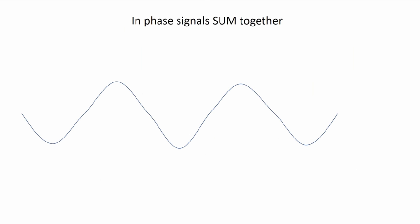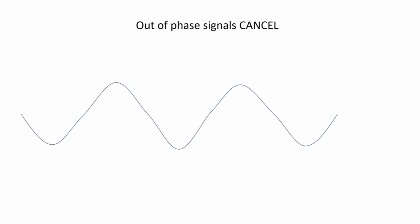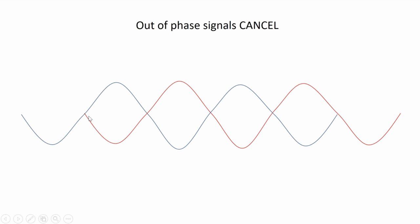Here are simple graphics. In-phase signals will sum together: here we have a sine wave, we add another sine wave, and when you put the two together you have twice the amplitude. Out-of-phase signals will cancel. Here we have the first arrival, and the second arrival coming in — it's in polarity but offset by half a wavelength. It starts a little bit later in time: it's in polarity but out of time. That's a very important distinction. When you have the two together, you end up with complete cancellation at that particular frequency.